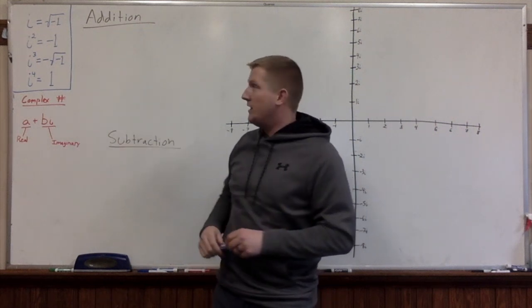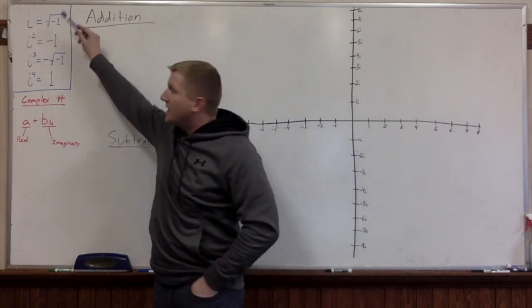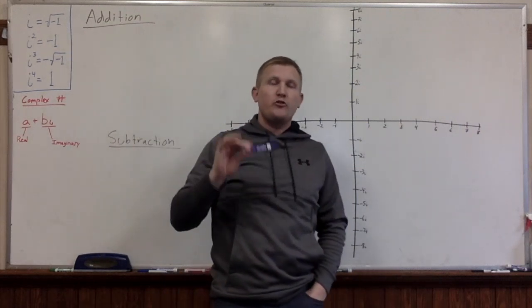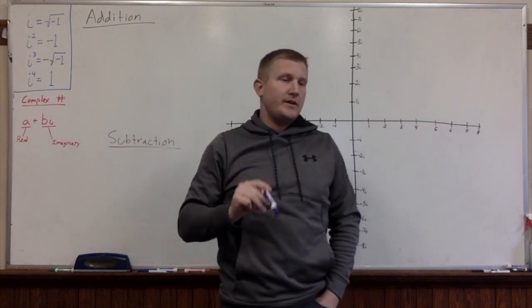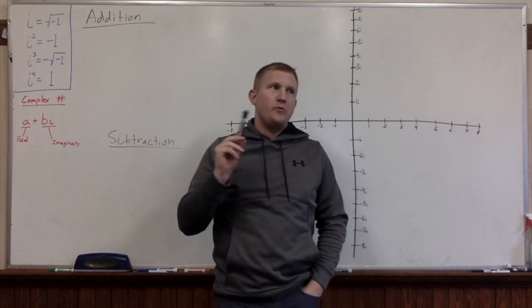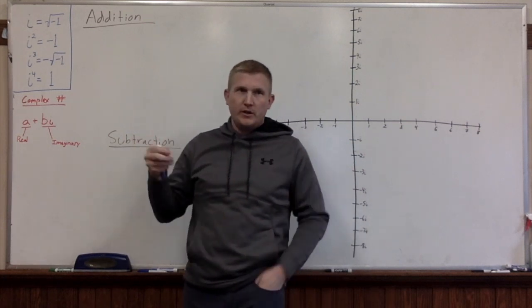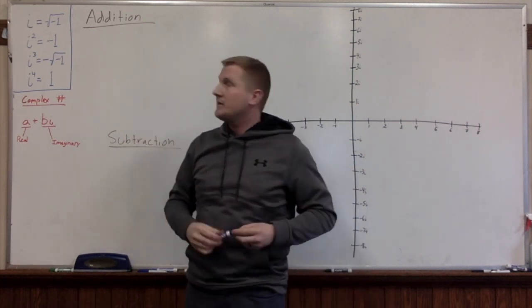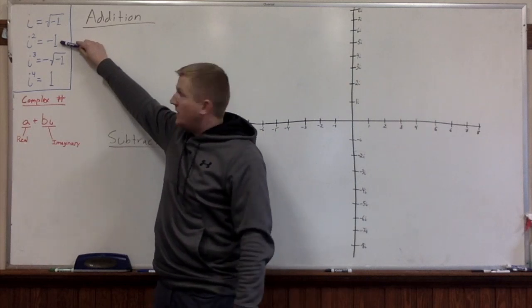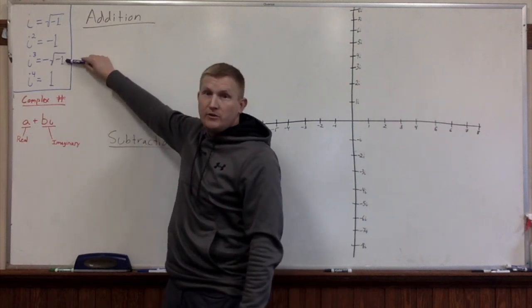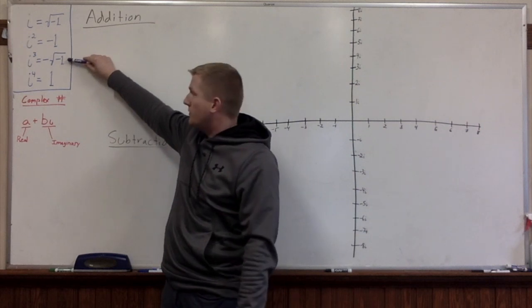Just over here on the left is what we've established so far: i ends up being equal to the square root of negative 1. Such a number does not exist in the real numbers, so we needed a new kind of number to articulate that. If you square it, that gets you negative 1. If you cube i, you get negative i, or negative square root of negative 1.